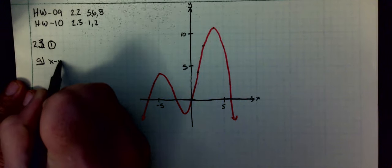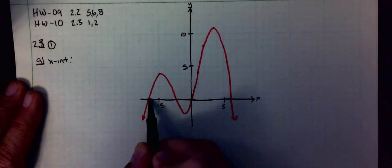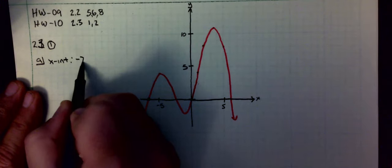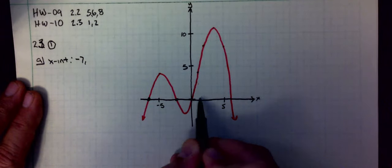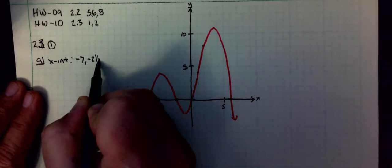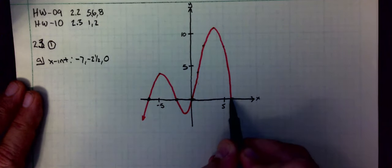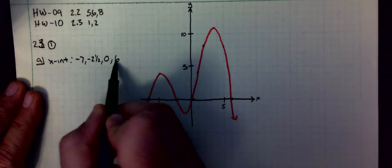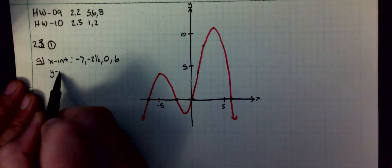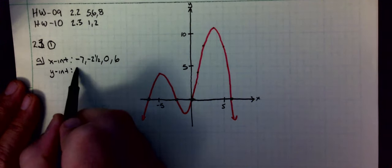Let's say x-intercepts: x-intercepts at negative 7, negative 2 and a half, zero, and six. y-intercepts: one of them, that is at zero.